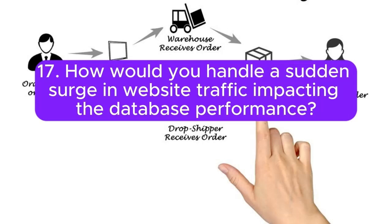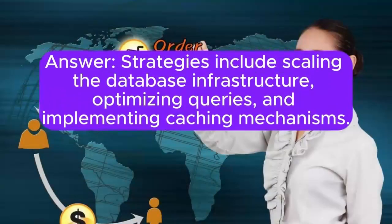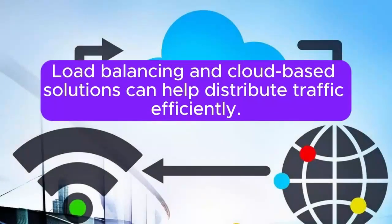Question 17: How would you handle a sudden surge in website traffic impacting database performance? Strategies include scaling the database infrastructure, optimizing queries, and implementing caching mechanisms. Load balancing and cloud-based solutions can help distribute traffic efficiently.